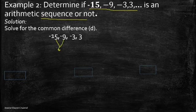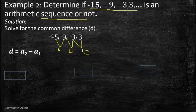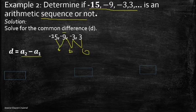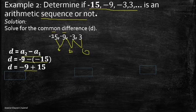We can also check: negative 3 minus negative 9 is also positive 6, and 3 minus negative 3 is also positive 6. That is the common difference. But let me show the detailed solution. By formula, a₂ minus a₁: our a₂ is negative 9 minus a₁ which is negative 15. Negative 9 minus negative 15 becomes negative 9 plus 15, and the answer is positive 6.